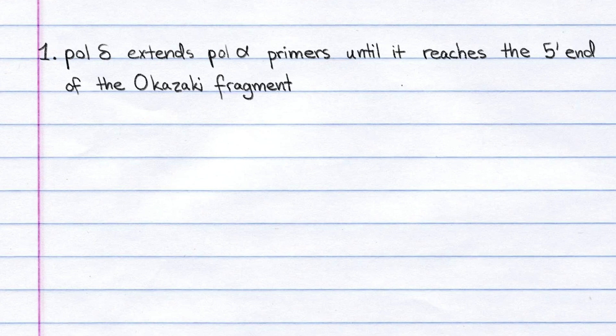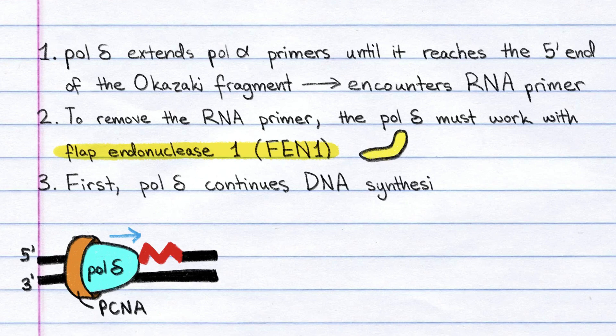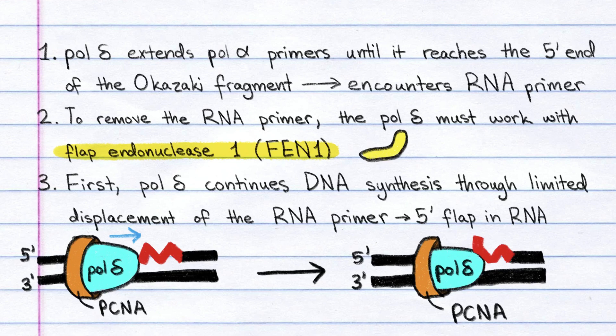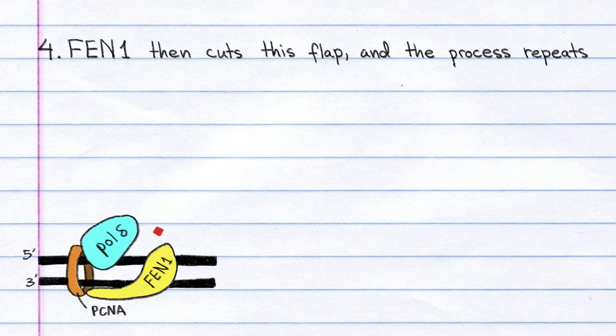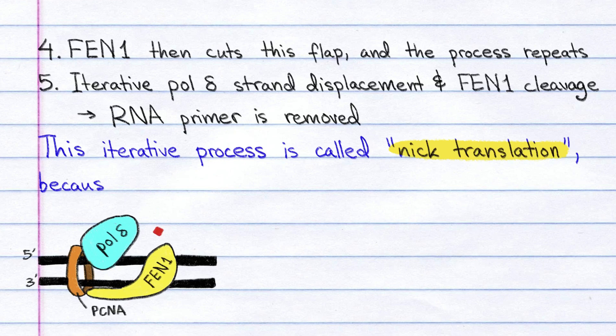How do the RNA primers between Okazaki fragments get removed? Pol-delta extends pol-alpha primers until it reaches the 5' end of the Okazaki fragment. There, it encounters an RNA primer. In order to remove the RNA primer, the pol-delta must work with flap endonuclease 1, or FEN1. First, the pol-delta continues DNA synthesis through limited displacement of the RNA primer. This produces a 5' flap in the RNA primer. FEN1 then cuts this flap, and the process repeats again. Eventually, through iterative pol-delta strand displacement and FEN1 cleavage, the RNA primer is removed. This iterative process is called nick translation, because the nick in the DNA is essentially shifted.